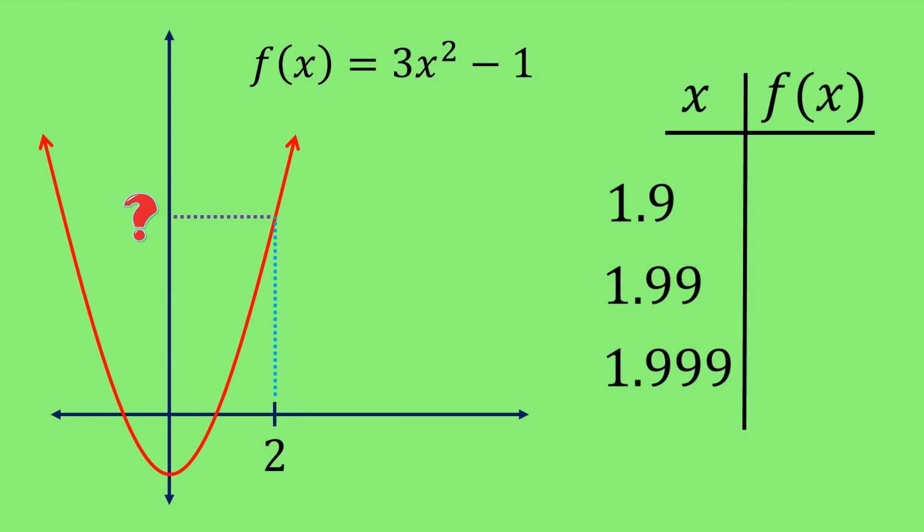Let's see an example of this with the function 3x squared minus 1. For this function, I'm really curious what value the function is approaching as I use x values close to the number 2. Let's see this by using some inputs like 1.9, 1.99, and 1.999.